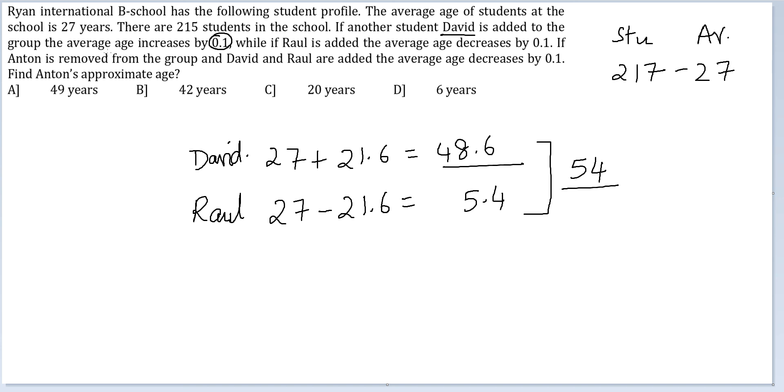Finally, if Anton is removed from the group and David and Rahul are added, the average decreases by 0.1. Which means Anton not only has his age as 27, but because he is taking away 0.1 from all the 217 people, his age should be 21.7. 27 plus 21.7 adds up to 48.7. And because the question says find Anton's approximate age, the answer will be option A, 49 years.